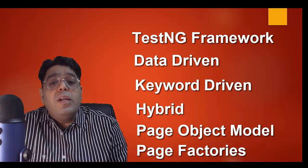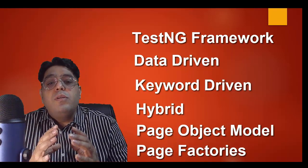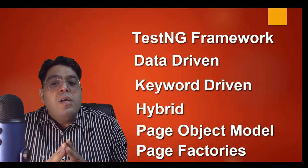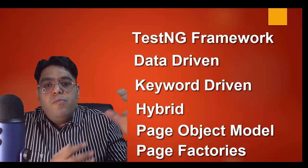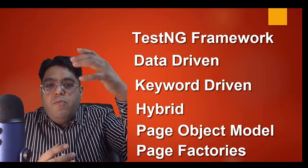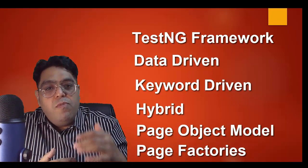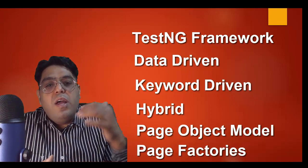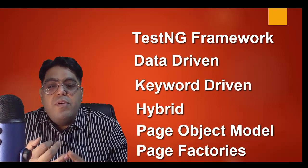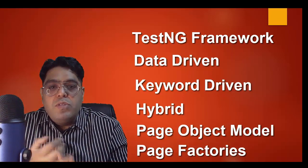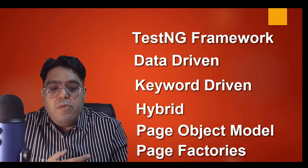In addition to this, you're also going to get access to one of the unique courses — Automation Architects 7 Live Projects — which covers end-to-end framework designing on different live projects. You'll be learning framework designing from scratch. We'll be writing each and every piece of code in front of you and designing the complete framework from scratch on a live project. We'll also be integrating tools like Maven, Jenkins, Git, and utilities like Log4j, Properties File, Database Connection, and many other utilities.